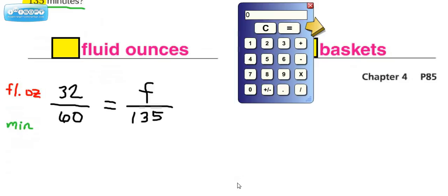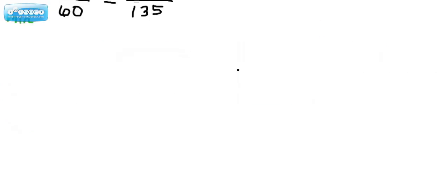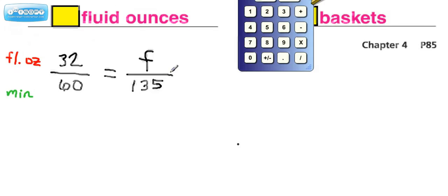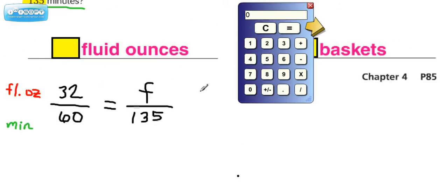We have a couple options once we get to this point. We can, of course, use cross products and do the 32 times 135. So I just want to show you that approach first. I'm going to show you how you might consider reducing this as another method, which is the method that the textbook is suggesting that you use.